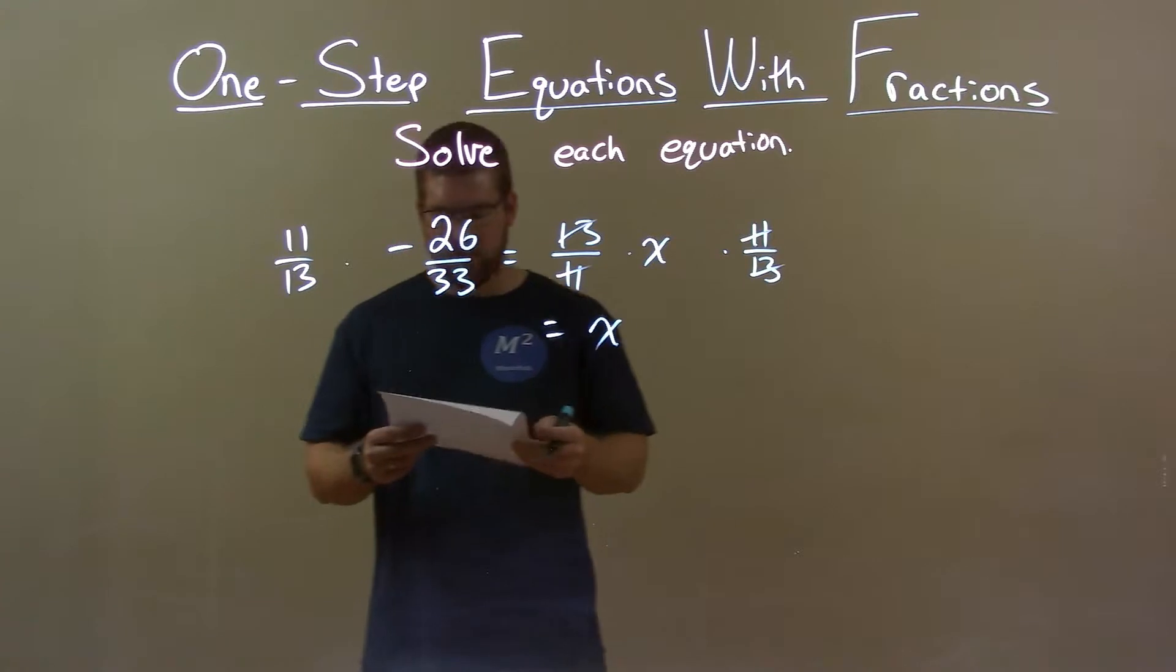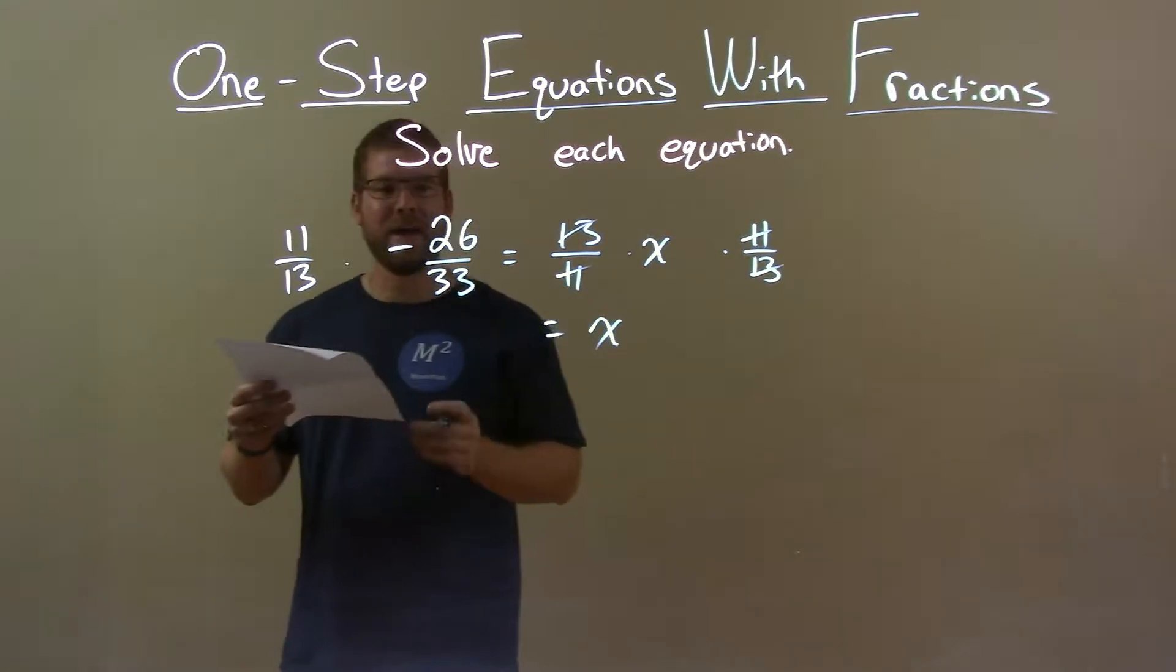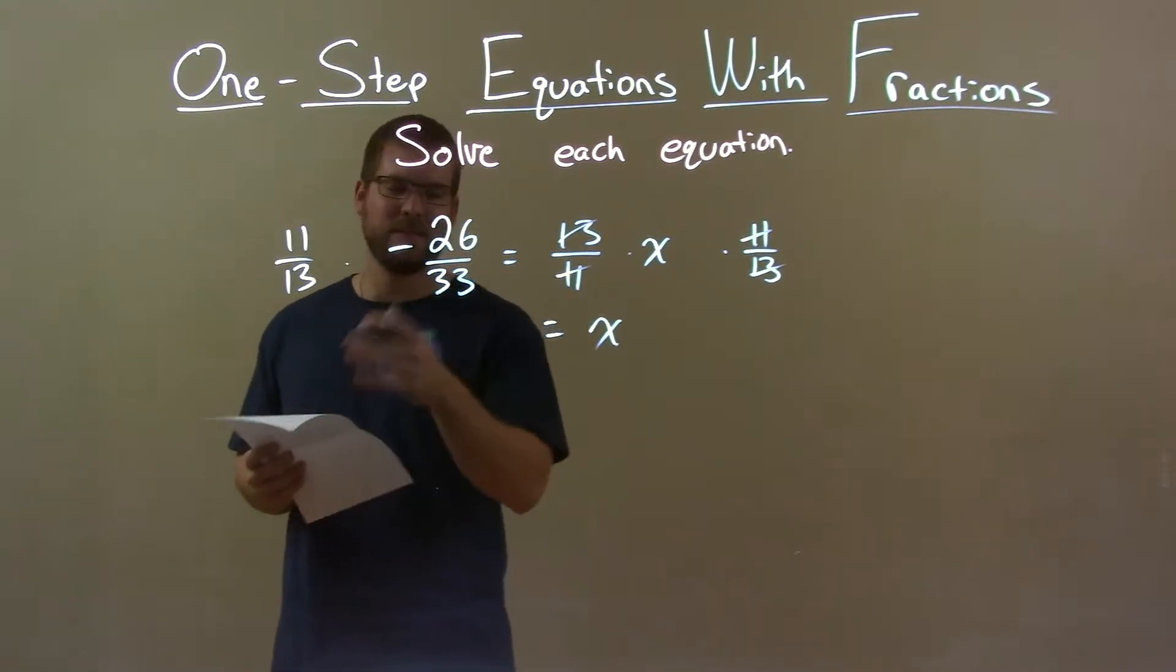Now, 11 over 13 times negative 26 over 33, that ends up simplifying. It's pretty easy to see. Let's just go through it.